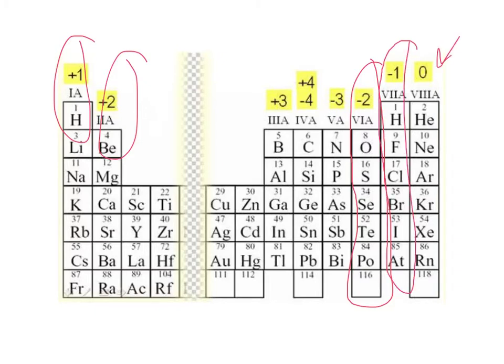Now let's follow oxygen through the reaction. The oxidation number of O2 is zero because it's an uncombined element. On the other side, the oxidation number of oxygen in water is negative 2 — it's in a compound that must equal zero, and with two hydrogens at plus 1 each (plus 2), we need negative 2. So oxygen went from zero to negative 2: oxygen is reduced, it gained electrons.